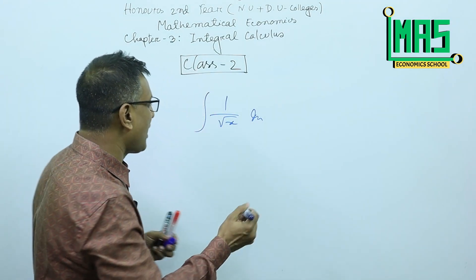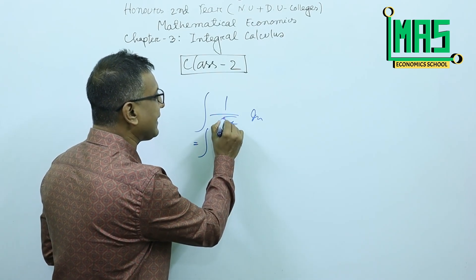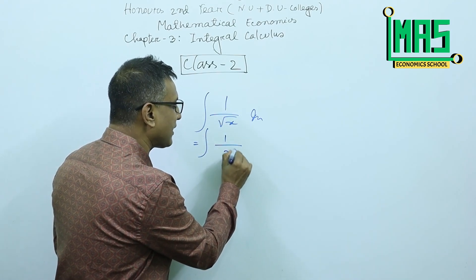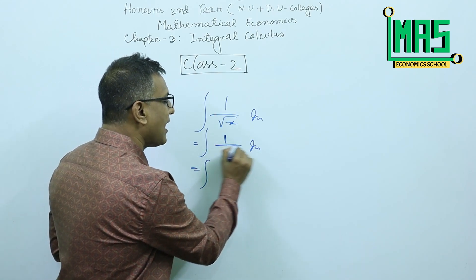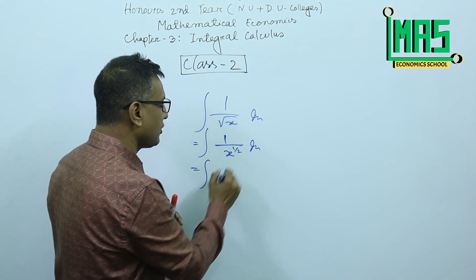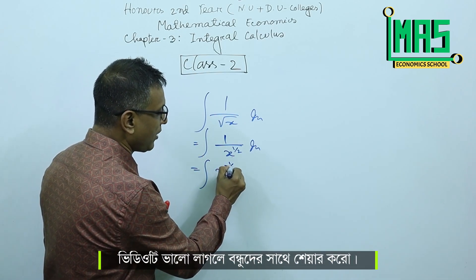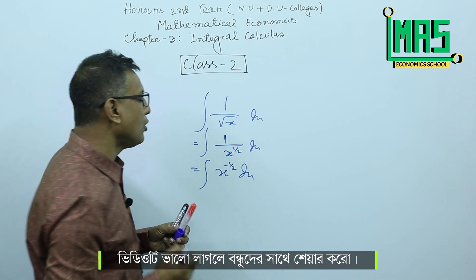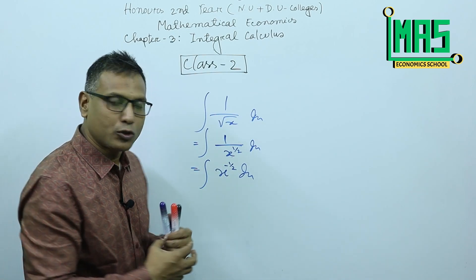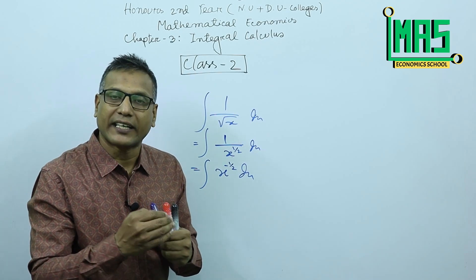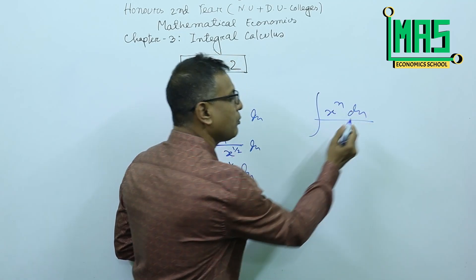Let's start with this: integration of 1 by x, where the square root of x means x to the power 1 by 2. So integration of 1 by x to the power 1 by 2 dx. This gives us x to the power minus 1 by 2 dx. This function uses the power rule formula.